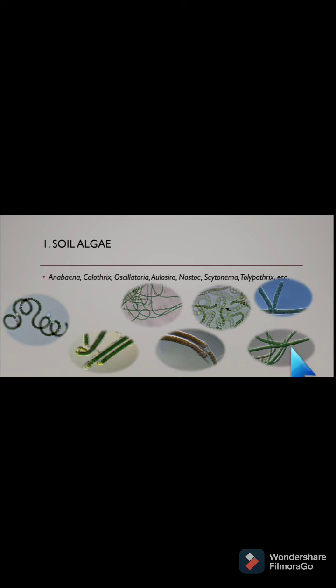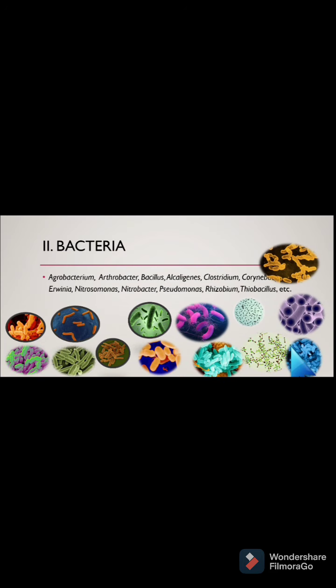The second group of microorganisms is bacteria. Bacteria are the smallest unicellular prokaryotic cells, measuring about 0.5 to 1 by 1 to 2 micrometers in length. They are the most abundant group and usually more numerous than other microorganisms found in the soil. Their number varies between 10 to the power 8 to 10 to the power 10 cells per gram of soil.